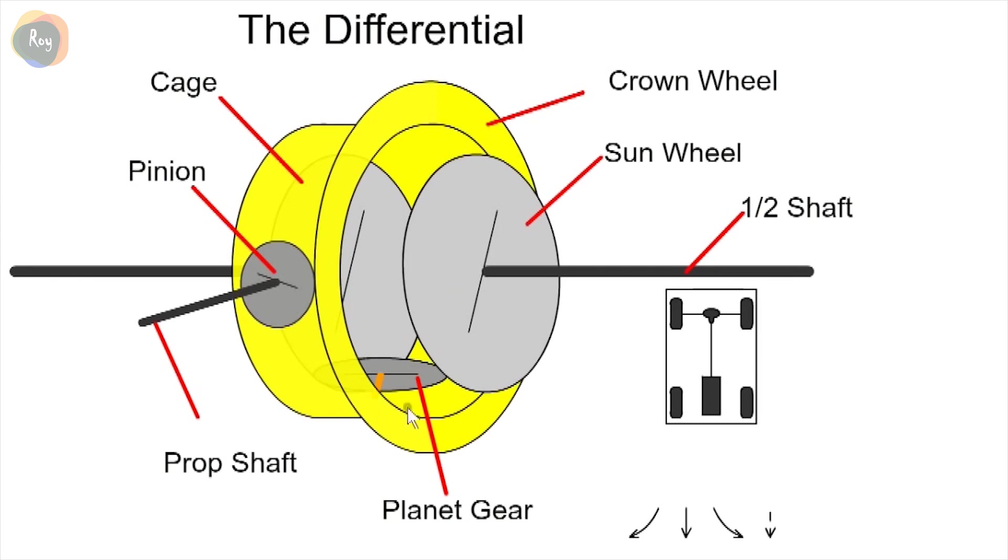The planet gear is attached to and rotates with the crown gear. The crown gear is meshed with the input pinion from the engine driven propeller shaft. The differential cage is attached to the crown wheel.